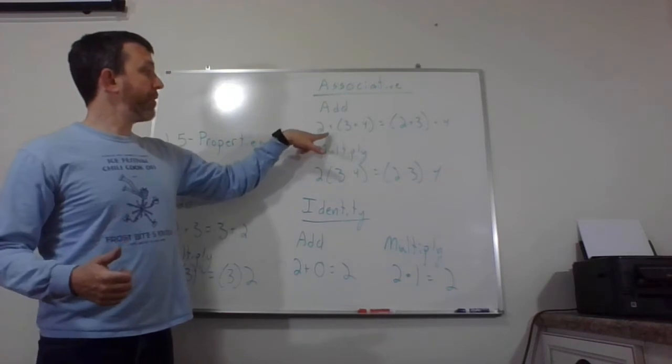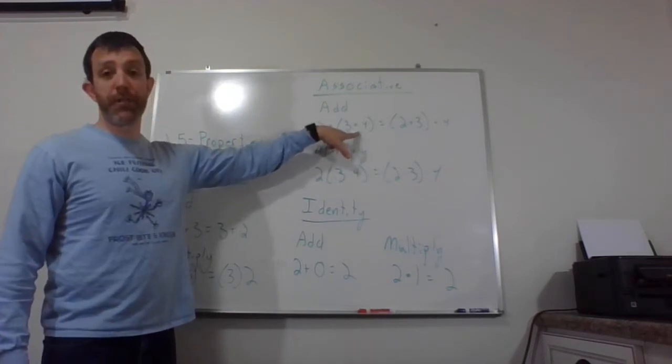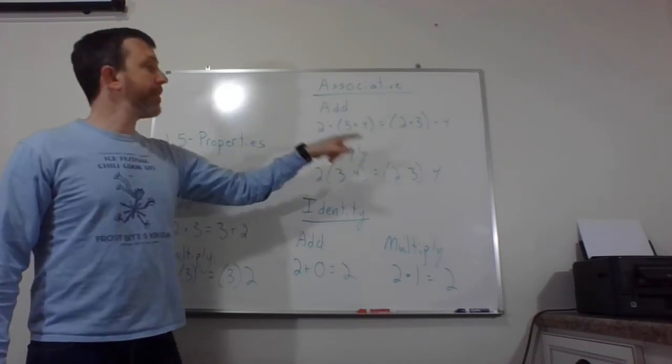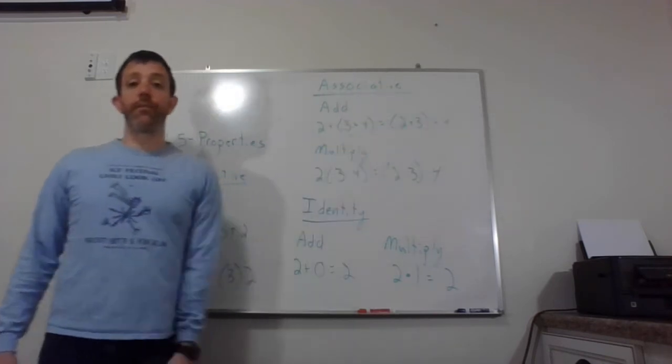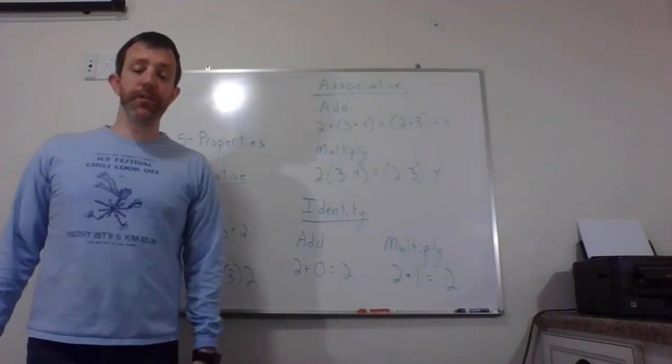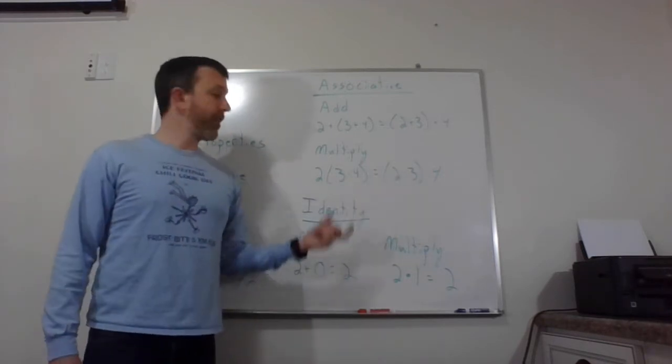So for addition, my first example here, I have two plus, and then inside the parentheses, three plus four. But that's exactly the same as if I move those parentheses to put it around the two and the three and then have plus four. So it works the same way for multiplication, just changing what is inside the parentheses.